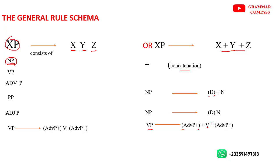The constituents of the verb phrase can be joined using the addition sign for concatenation, but we can also omit the addition signs — the rule remains the same. It is based on preference. If we remove all the addition signs, we have the same rule, just without the plus signs showing concatenation. This is the general rule schema and how to read phrase structure rules. In the next lesson we are going to talk about the rules for the noun phrase — stick with us.